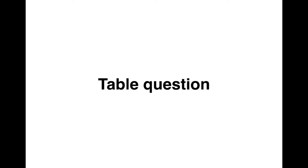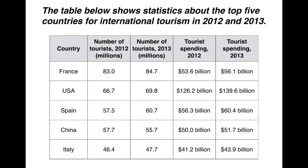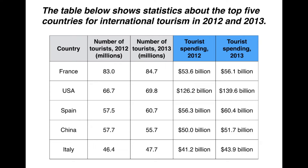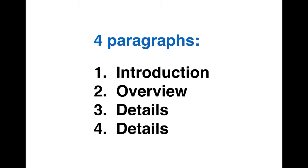Let's look at our table question for today. The table below shows statistics about the top five countries for international tourism in 2012 and 2013. Looking at the table, you can see on the left we've got countries. Then the next two columns show numbers of tourists in 2012 and 2013 — that's numbers of people in millions. And the final two columns show tourist spending in billions of dollars. As usual, we're going to write four paragraphs: an introduction, an overview or summary, and two paragraphs of details. We don't write a conclusion, but you could put the overview at the end if you wanted. I prefer it as paragraph two.